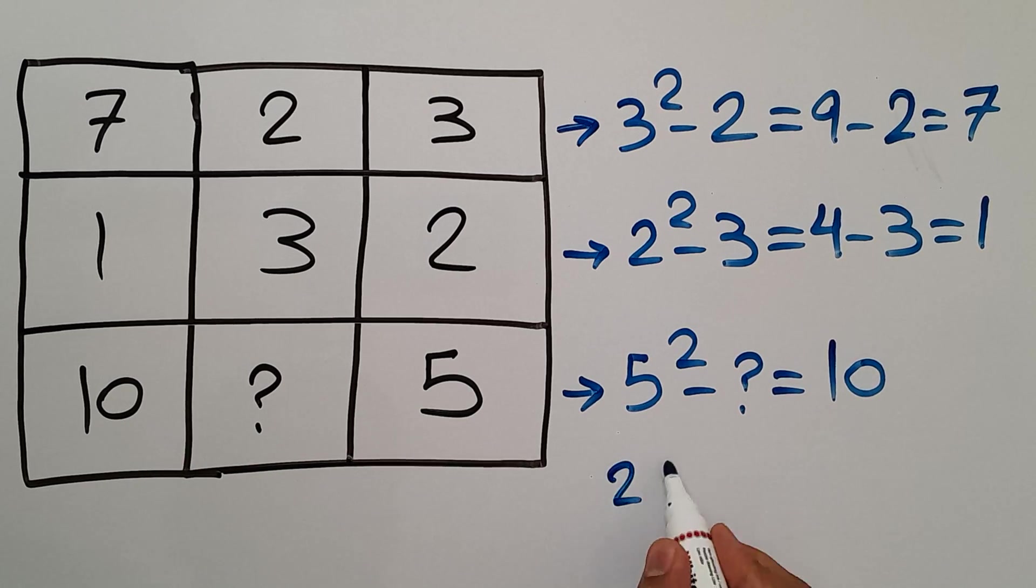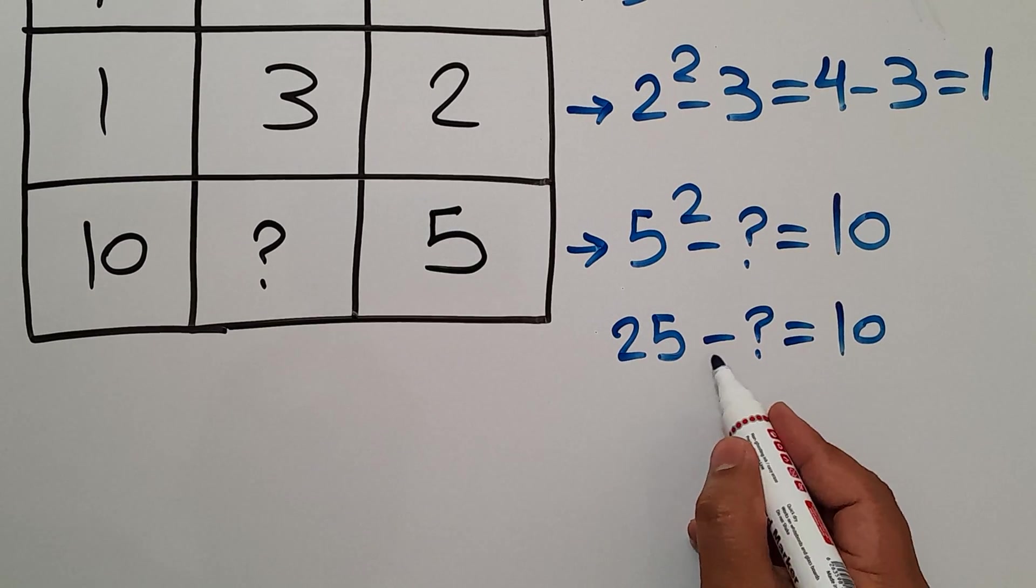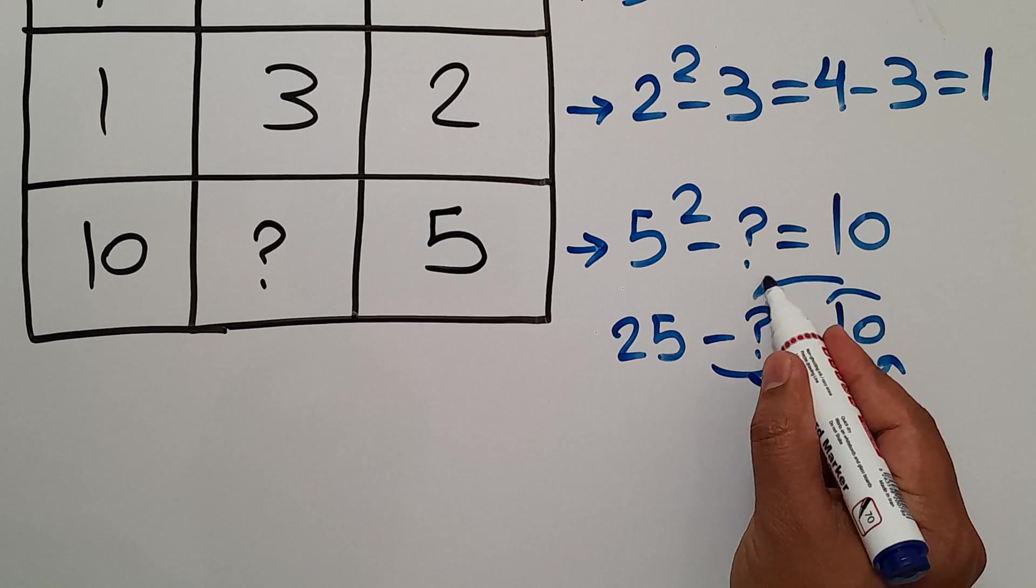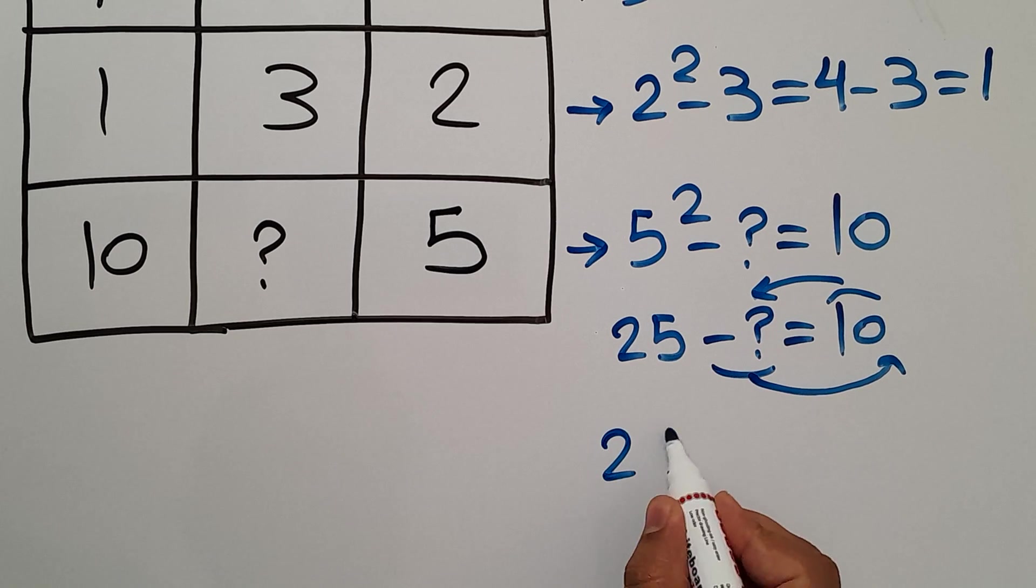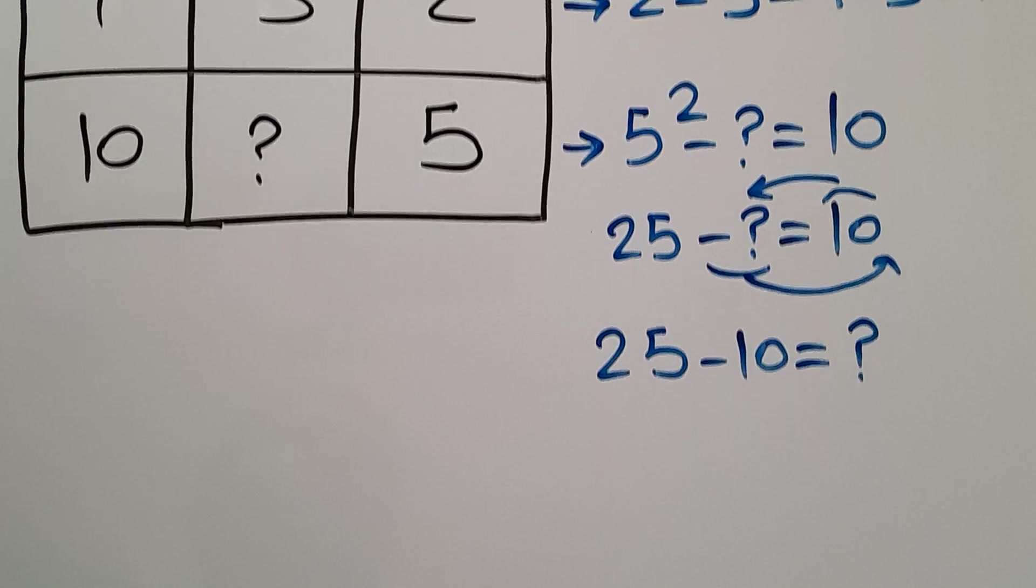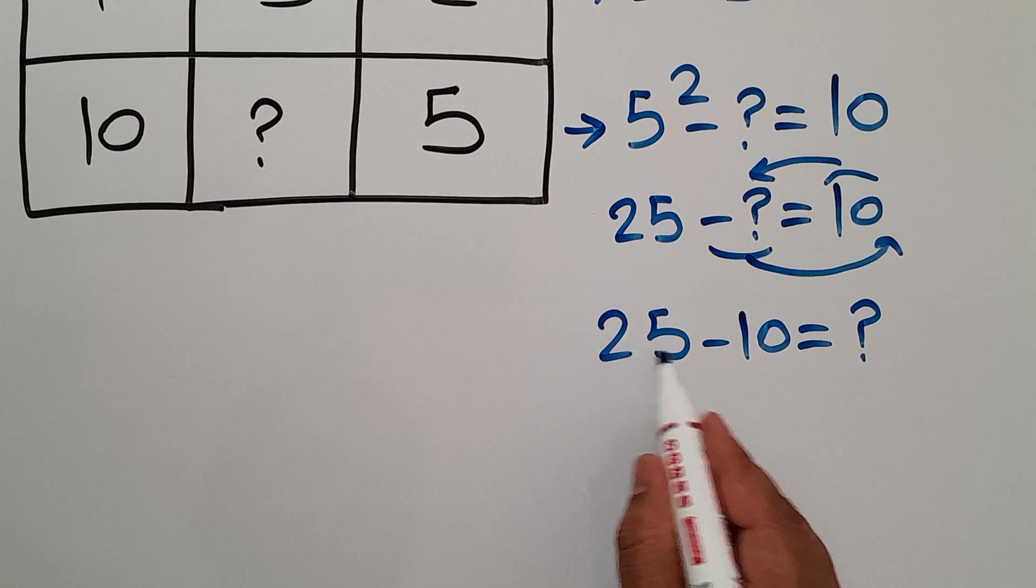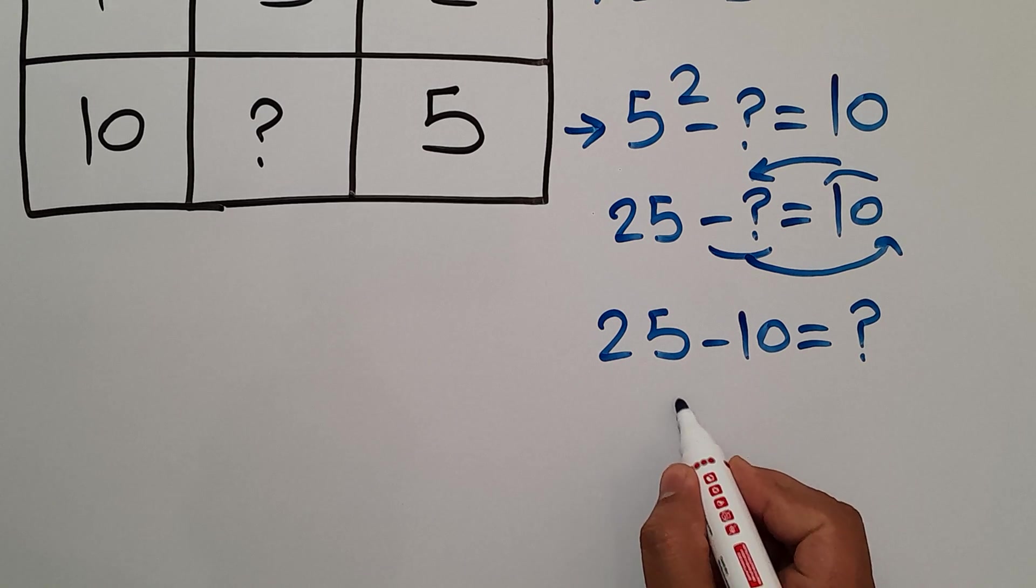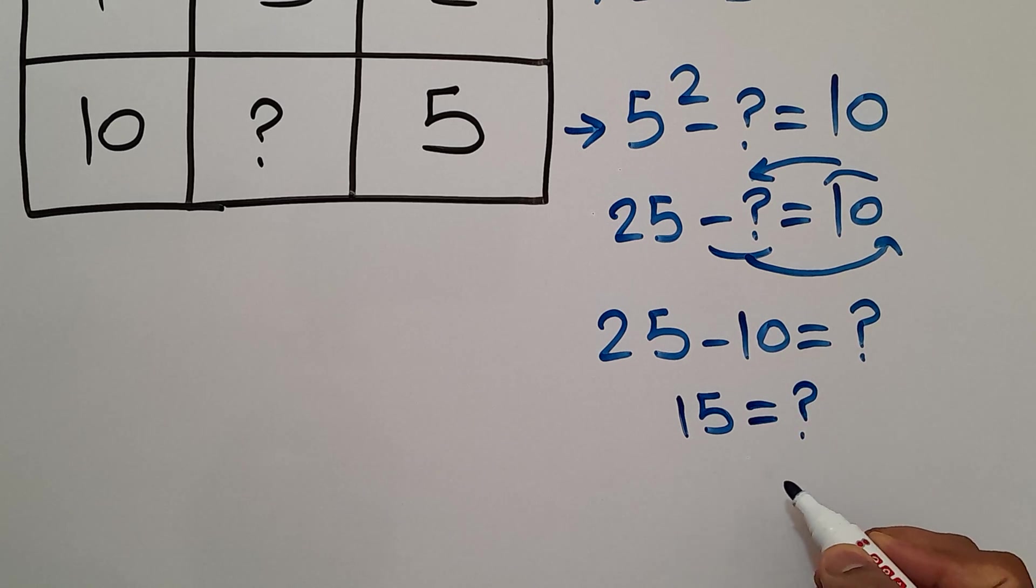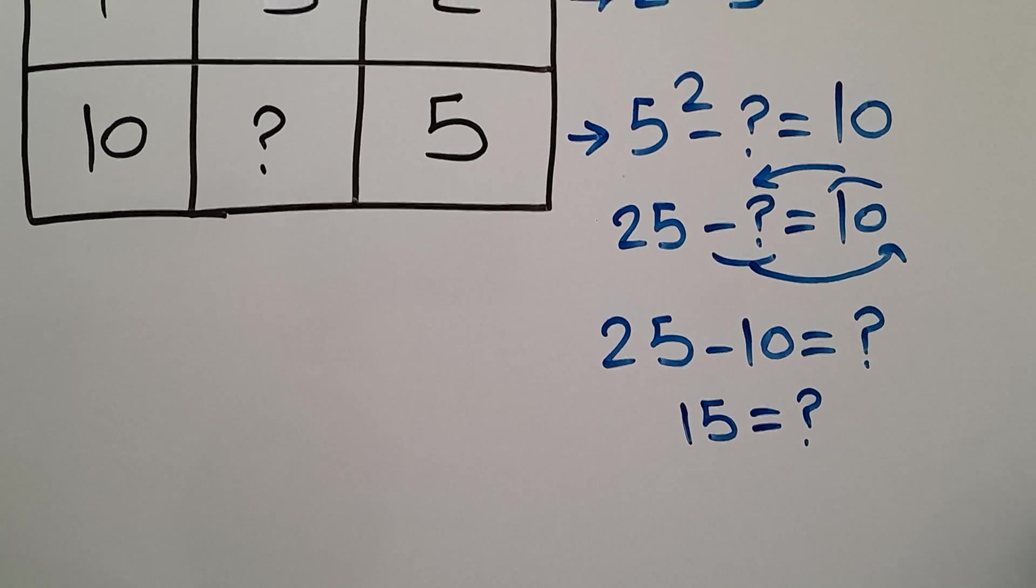No, 25. 5 squared is 25, so 25 minus question mark equals 10. Let's move minus question mark to the right hand side and 10 to the left hand side. So we have 25 minus 10 equals question mark. Therefore, 25 minus 10 gives us 15. So our final answer to this problem is 15.